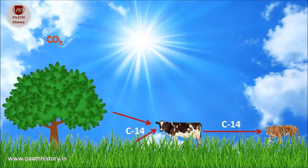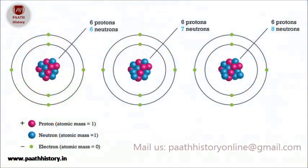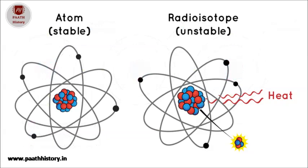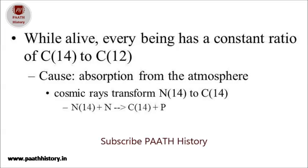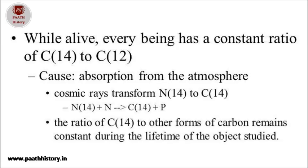There is a certain proportion between the two types of carbon, and this proportion tends to remain constant due to an important feature of carbon-14. Carbon-14 is radioactive — also known as radiocarbon — and being a radioactive isotope it decays. This decay ensures that the proportion between carbon-14 and carbon-12 remains constant, even though carbon-14 is constantly being formed due to cosmic energy rays.